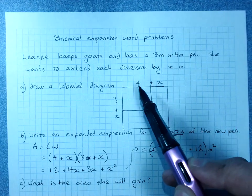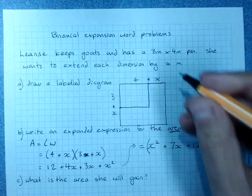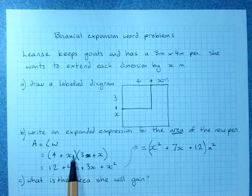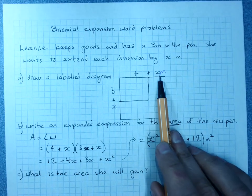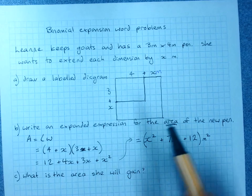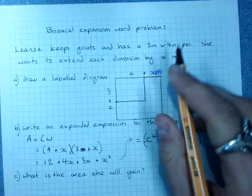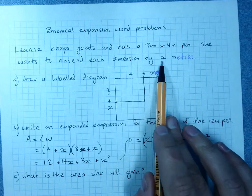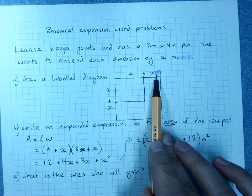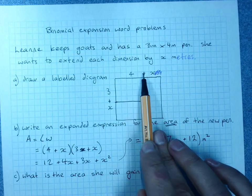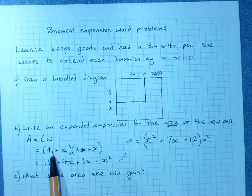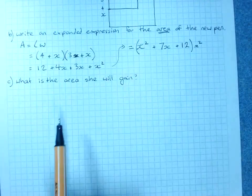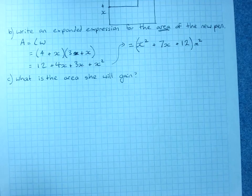Do not write four plus x m and think that that m goes in here. It doesn't. We don't ever put the units in our working unless there's a very good reason. The meters stays out. You're just dealing with x, four plus x. Don't put four m plus x m and then do an expansion with four m plus x m. It would go very badly for you. Don't do it.